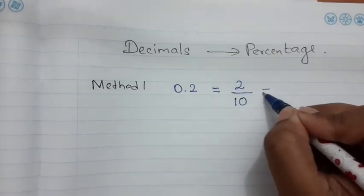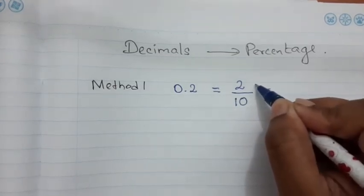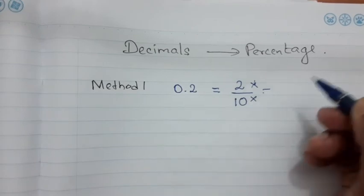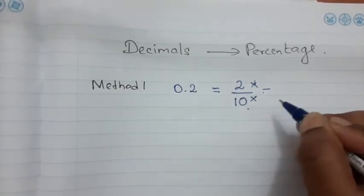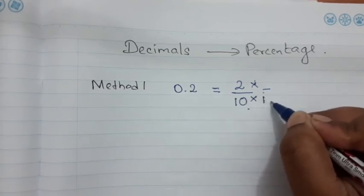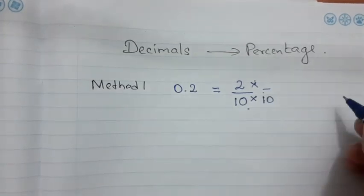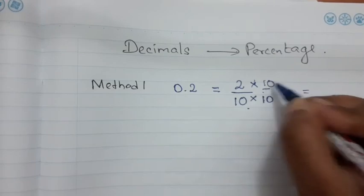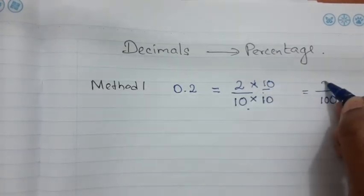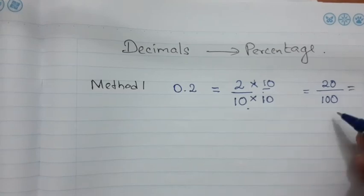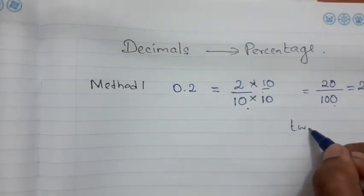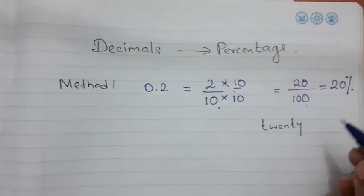Once you have converted 0.2 into a fraction, you follow the previous method of converting a fraction to a percentage. Since there is one digit after the decimal point, the denominator is 10. To make the denominator 100, multiply by 10 — so the numerator becomes 2×10 = 20. Now we have 20 out of 100, so it is 20%.